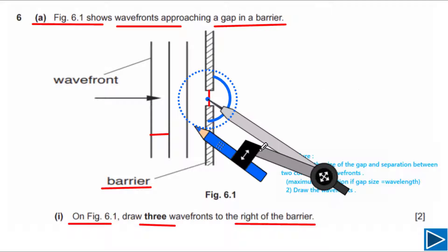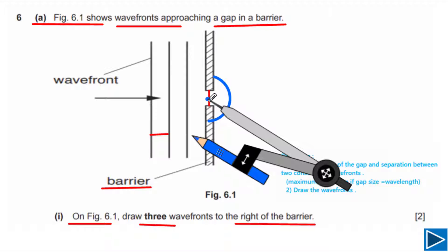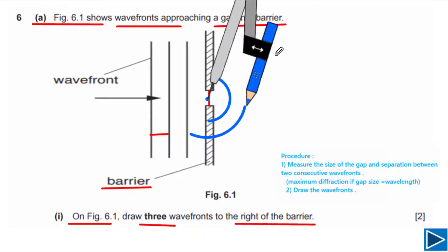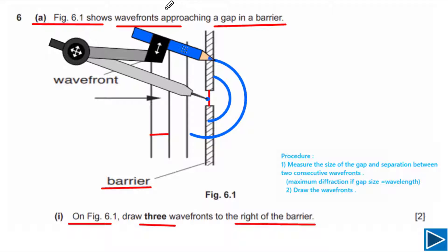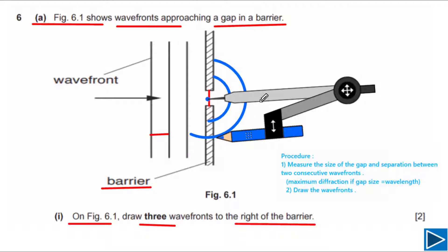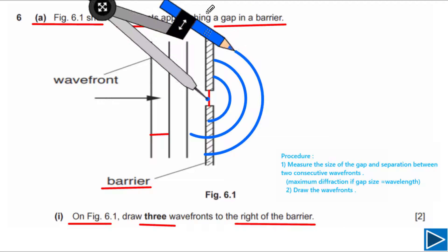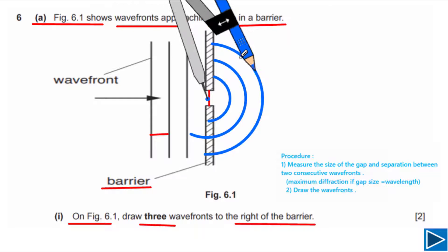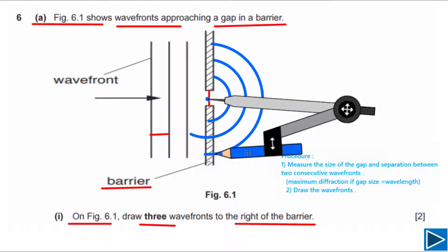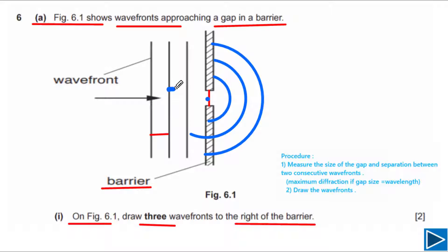Open the compass equal to the radius from the center to the second wave front and draw the second circular wave front. For the third one, open the compass up to the third wave front from the center and draw the third wave front. We need to be very careful with the distance — the distance between all wave fronts has to be the same, because it is the same type of wave in the same medium.